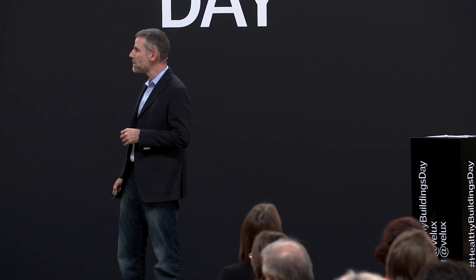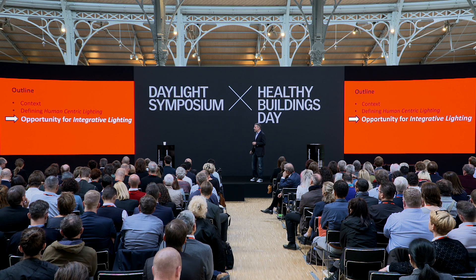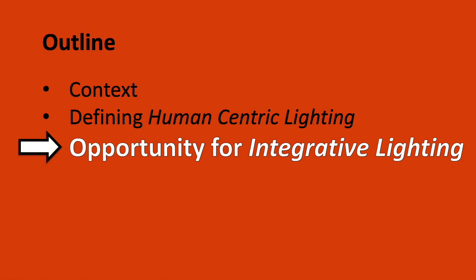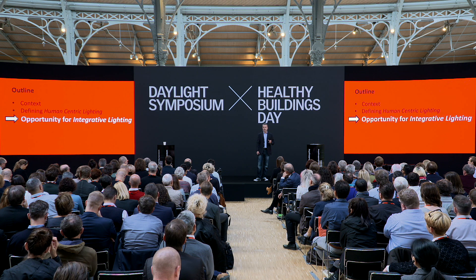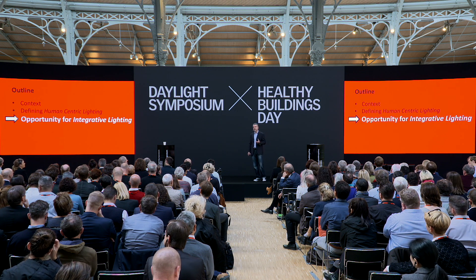Note number three says the term human-centric lighting is used with similar meaning. So from my view as a scientist, engineer, and educator, I'm going to prefer to use the term integrative lighting over human-centric lighting. What's the opportunity then for integrative lighting in applied environments, in applied illuminating engineering, in the built environment?